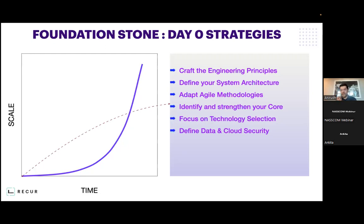As an engineering leader, one should spend time on how technology selection should be done. The last and most critical day zero strategy, which bites us if we don't do it at the right time, is defining your data and cloud security. How should your data be encrypted? Where will your data be stored? Who has access to data? How can your data be tweaked or leaked? Are we doing enough VAPT penetration testing? Are we having everything in a DMZ? Do we have a private VPC for our data? If it's hard to implement these principles now, it will be harder when we're fixing things in a moving train.